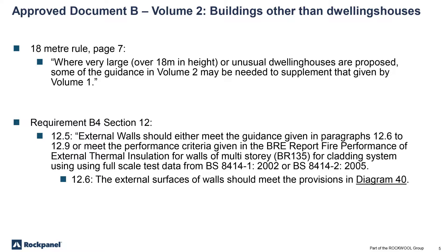So we go to Volume 2 to find out what we need to do for flats. On page 7, where very large — over 18 metres in height — or unusual dwelling houses are proposed, some of the guidance in Volume 2 may be needed to supplement that given by Volume 1. The requirement — paragraph 12.5 — is that external walls should either meet the guidance given in paragraphs 12.6 to 12.9, or meet the performance criteria given in the BRE report: fire performance of an external thermal insulation for walls of multi-storey buildings, BR135, for cladding systems using full-scale test data from BS 8414.